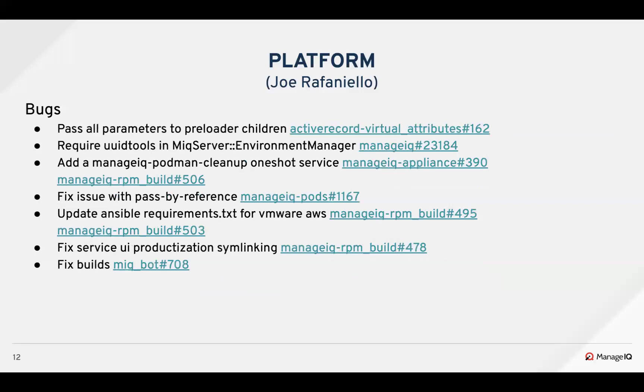For platform bugs, Keenan changed the virtual attributes to pass all of the expected keyword arguments to the Rails preloader. Adam fixed a bug with missing UUID tools at server startup. Adam also added a Podman cleanup one-shot service to ensure any temporary files are cleaned from persistent storage. Jason fixed a pass-by-reference bug in the operator. Keenan updated the Ansible requirements to address an issue with pyvmomi not having JSON output support. Jason fixed a bug in the service UI productization — it was not correctly handling if the desired symlink directory already existed. Brandon fixed the bots build by resolving dependency conflicts and a missing header.